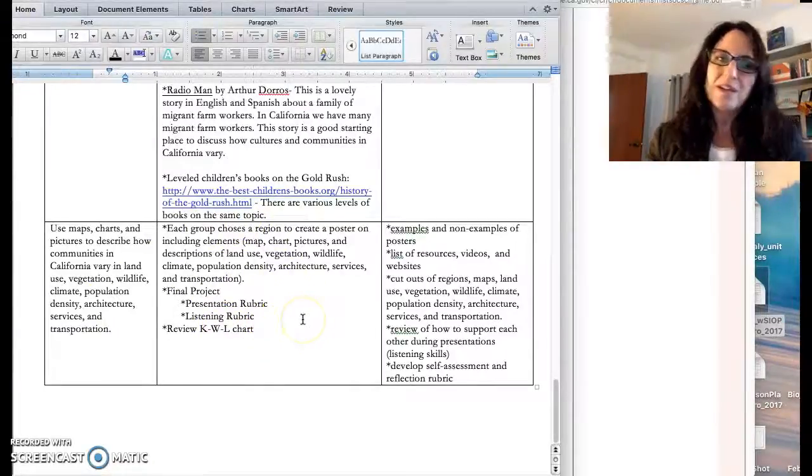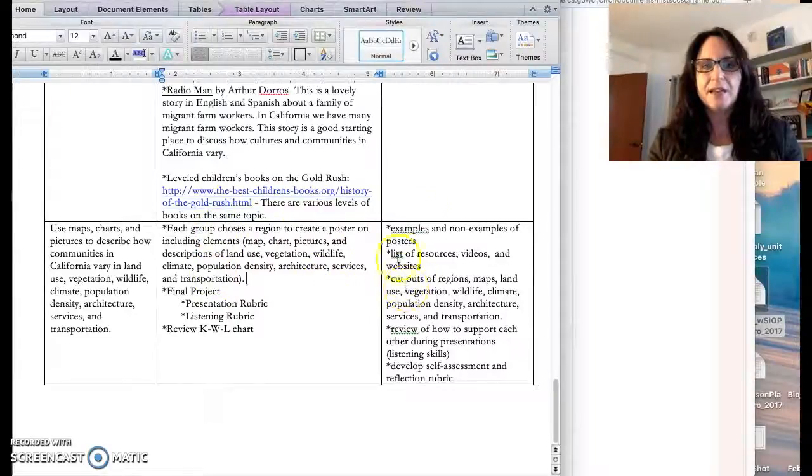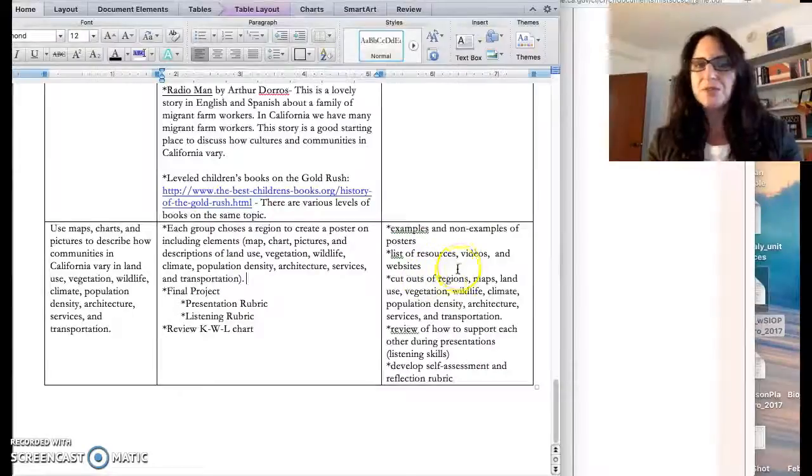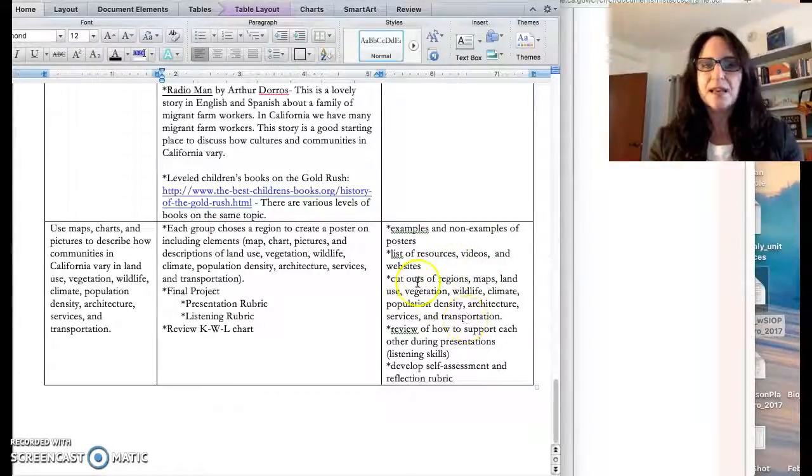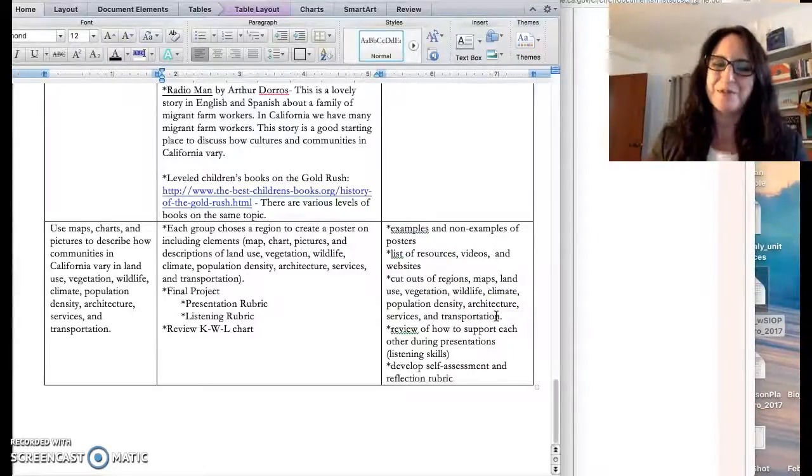We describe how communities in California vary in land use, vegetation, wildlife, etc. Some of the ways that we could do this is we could have all the students create a poster for the different areas, providing examples and non-examples, resources, multiple resources, cutouts so that they aren't trying to create images from scratch, but rather they're able to really focus on them.